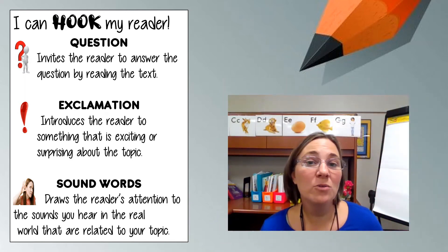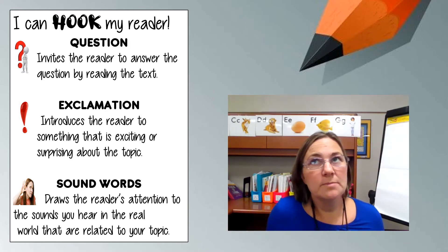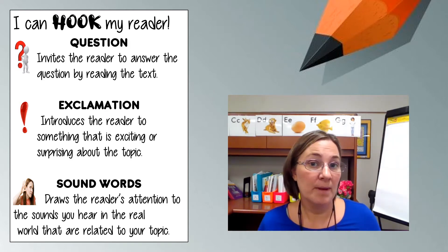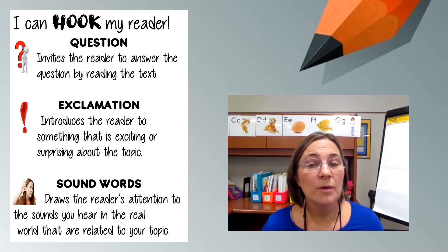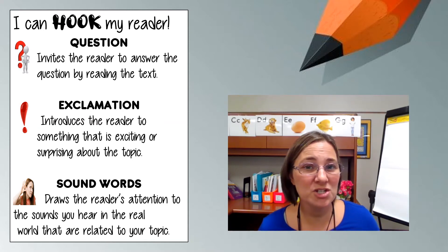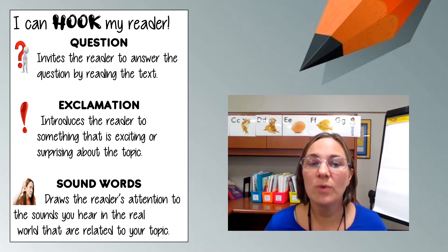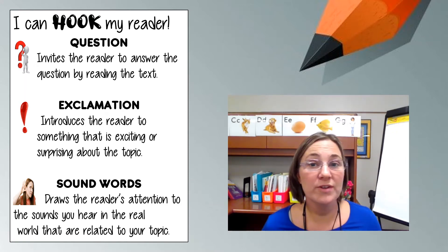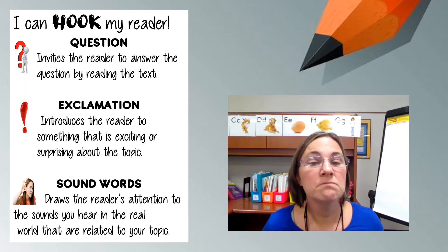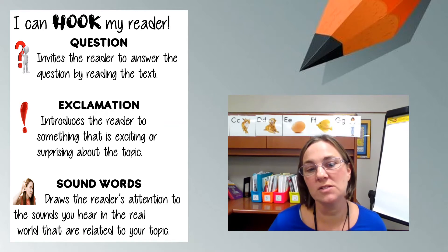Now I want to try this work with my own writing about dogs. First I need to think about what's important about my topic. My topic is dogs, and it's important that there's a lot of things we need to learn about dogs. I want to make sure to put that in my introduction, my lead, so that my reader knows what they're going to read about. First I'm going to try a question lead — I'm going to ask a question that makes the reader want to keep reading. I could say, 'Did you know there is a lot to learn about dogs?' Then the reader might think, 'I didn't know that, let me keep reading.' So that would be one way I could start.